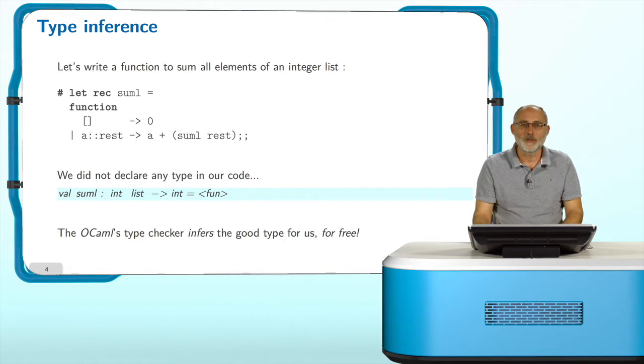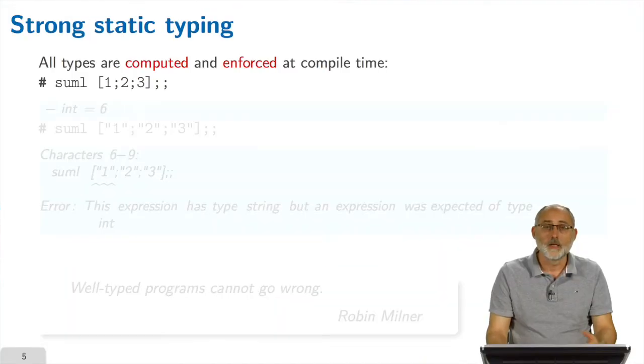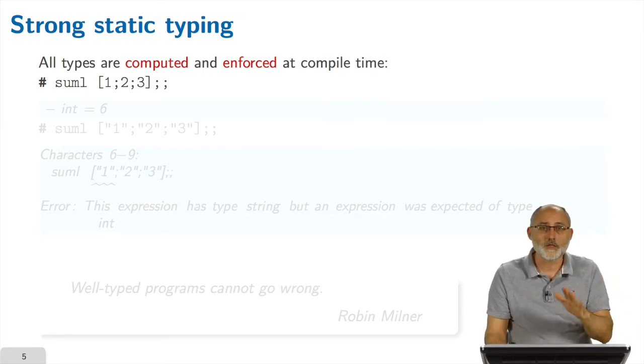And yet, as soon as you hit enter here, the system answers you with this message. It says, thanks a lot, you defined a value which is sumL. This is actually a function that takes an integer list and returns an integer. The OCaml type checker has inferred for us the good type of this program for free.